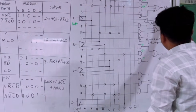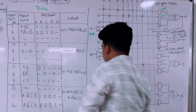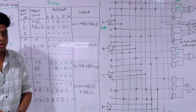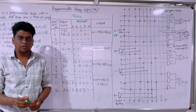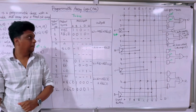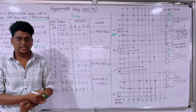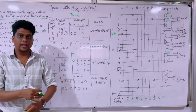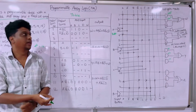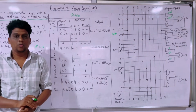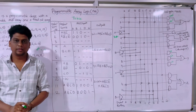Finally, the outputs are Z, W, X, Y — all with input buffers. This is how the implementation is done with PAL. Compared to PLA (Programmable Logic Array), PAL has more advantages and implementation is somewhat more complex, but the efficiency is very high. Thank you for watching.